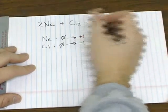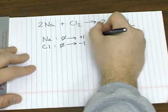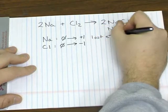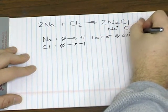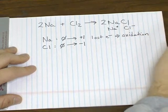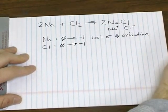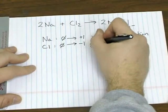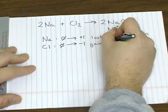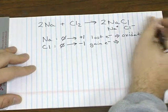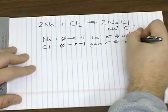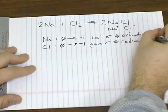So during this reaction sodium lost an electron which is known as an oxidation, or we say sodium has been oxidized. Chlorine gained electrons so it has undergone reduction or it has been reduced.